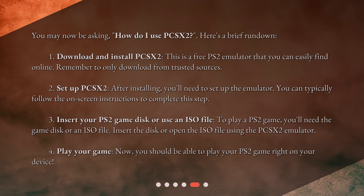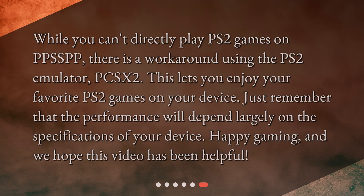Step three: insert your PS2 game disc or use an ISO file. To play a PS2 game, you'll need the game disc or an ISO file — insert the disc or open the ISO file using the PCSX2 emulator. Step four: play your game. Now you should be able to play your PS2 game right on your device.